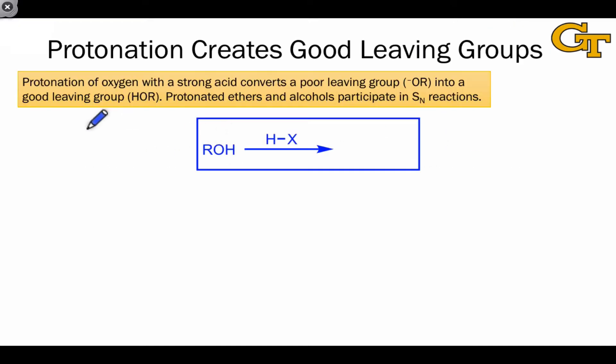Proton-mediated nucleophilic substitutions typically involve the protonation of an oxygen atom that's part of an ether or hydroxyl group. This converts what would be a poor leaving group, OR-, into a good leaving group, the neutral fragment HOR, alcohol or water.